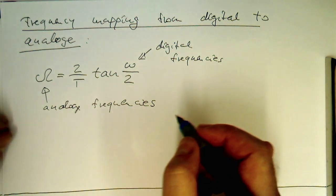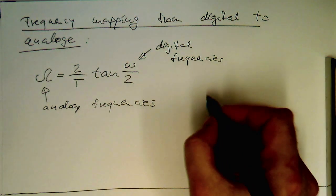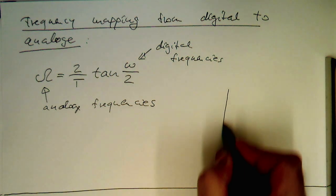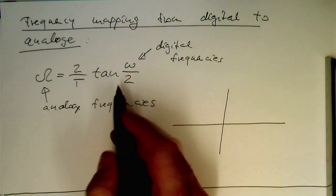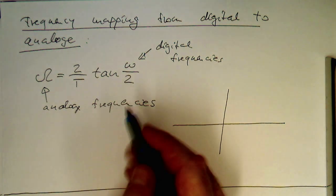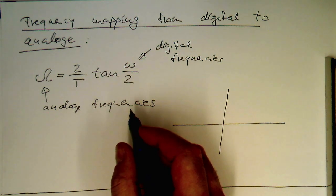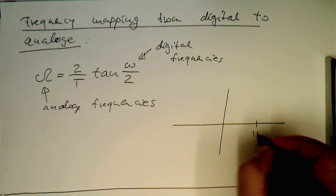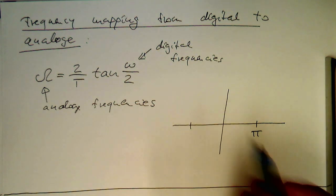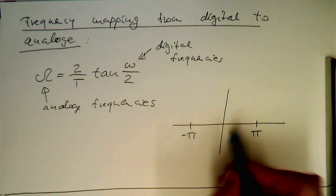So how does it look like? We can obviously easily make a plot out of this. Now we know that the tangent is going to infinity at pi half. And so therefore because of this, the tangent goes to infinity at pi, and it goes also to minus infinity at minus pi.